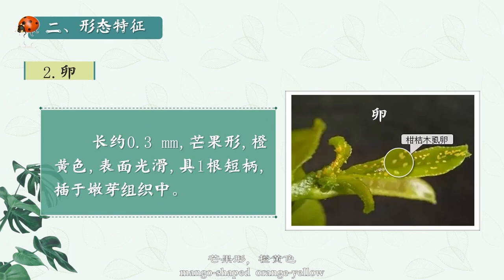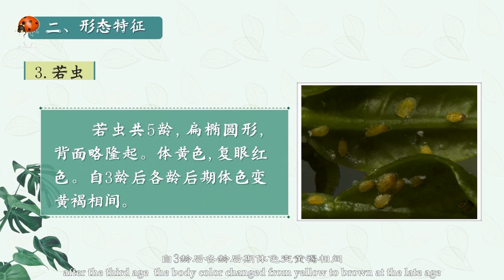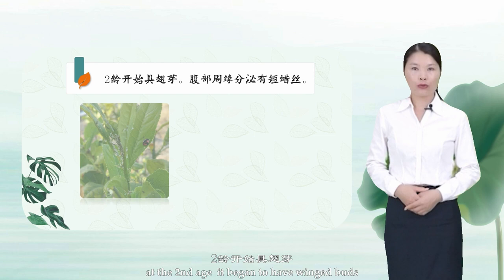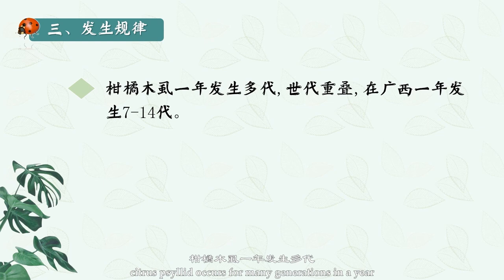Two: The egg. The egg is about 0.3 mm long, mango-shaped, orange-yellow with a smooth surface and a short stalk inserted in the bud tissue. Three: Nymphs. Nymphs have five instars. They are oblate and oval with a slightly raised back, yellow body, and red compound eyes. After the third instar, body color changes from yellow to brown. From the second instar, winged buds begin to appear and short wax filaments are secreted around the abdomen.